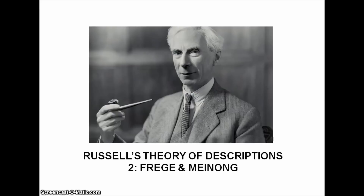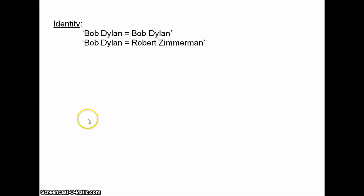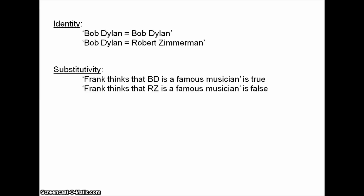Firstly, there was the puzzle about identity. How do we account for the difference between the statements 'Bob Dylan is Bob Dylan' and 'Bob Dylan is Robert Zimmerman', if both Bob Dylan and Robert Zimmerman refer to the same thing? Then there was the problem of substitutivity: how do we account for the fact that one of these statements is true and the other is false, given that the name Bob Dylan and the name Robert Zimmerman refer to the same thing?